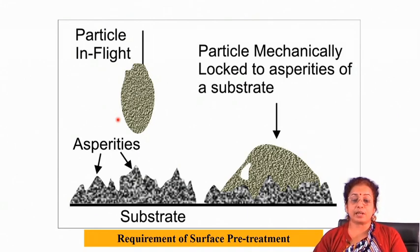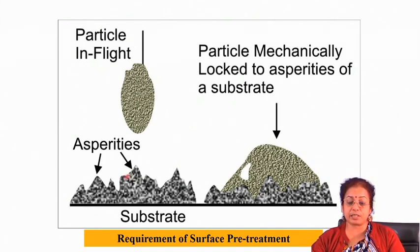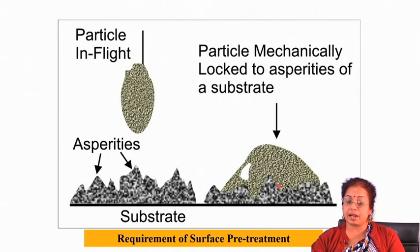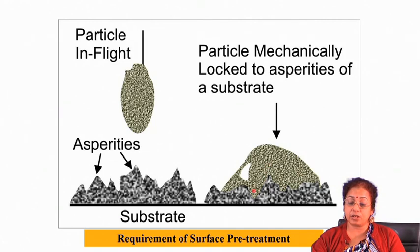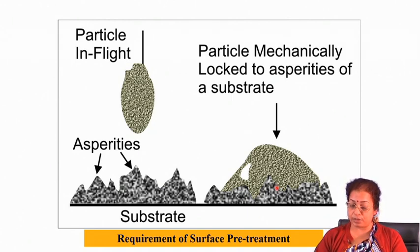The asperities on the surface of the substrate help the molten material to lock onto the substrate surface. It is desirable that asperities are regular in dimension so that the degree of wetting is maximized and you get a nicely wettable, well-bonded coating on the surface of the substrate.